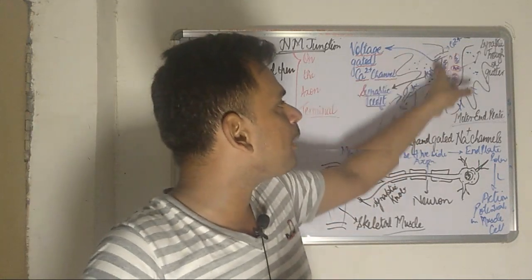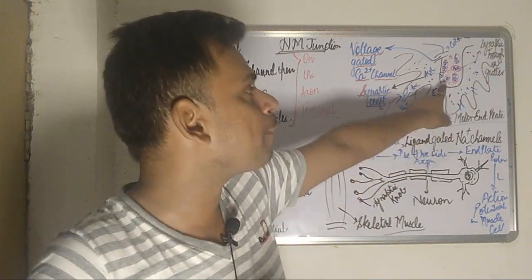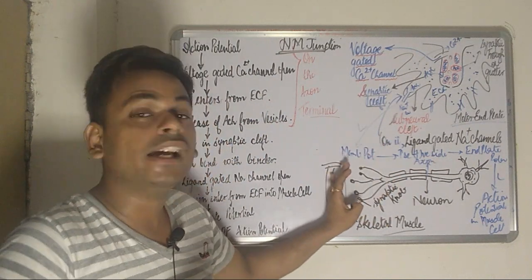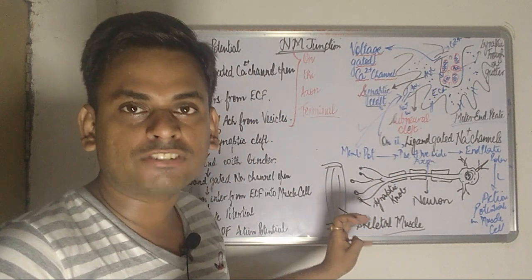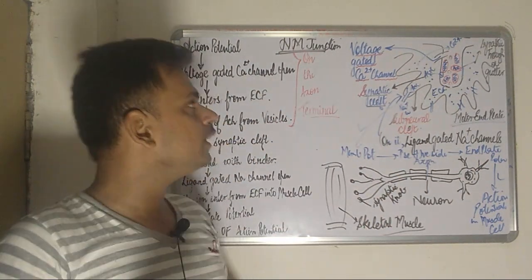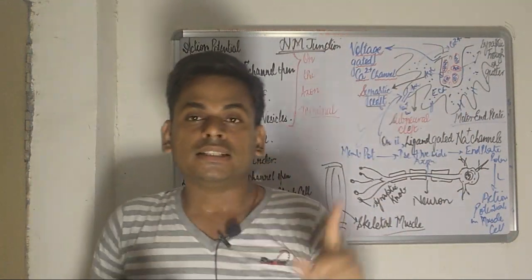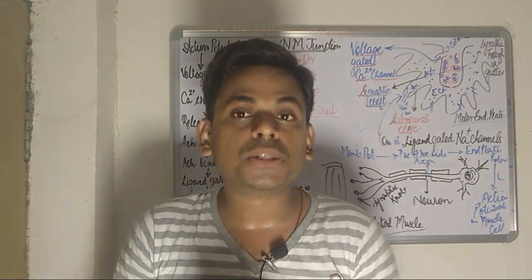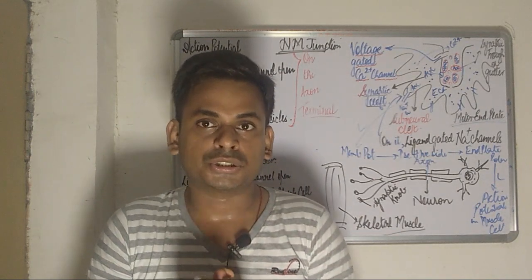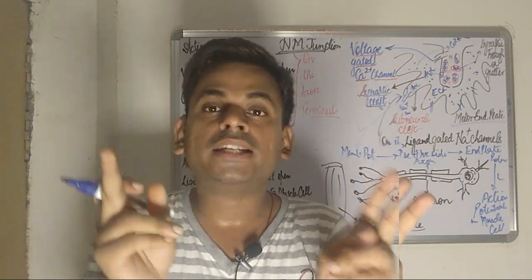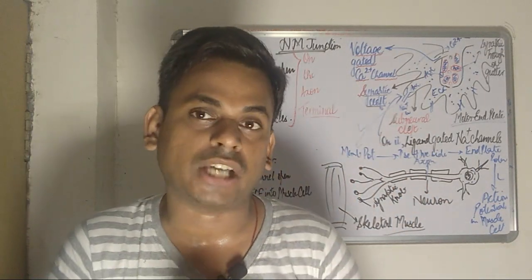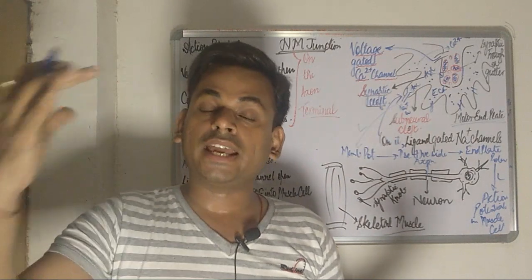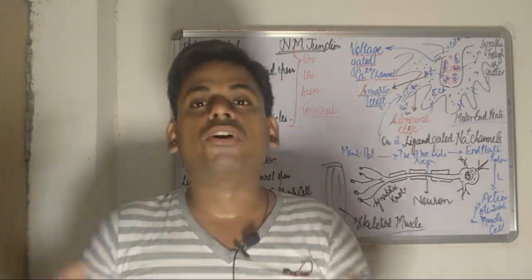This is the synaptic knob, and this membrane is also called the presynaptic membrane. These synaptic knobs lie adjacent to the muscle fiber, that is the skeletal muscle fiber or the effector muscle. Between a nerve fiber and a muscle fiber, there is one neuromuscular junction. So one nerve fiber and one muscle fiber have one neuromuscular junction, but the entire muscle has a number of neuromuscular junctions.